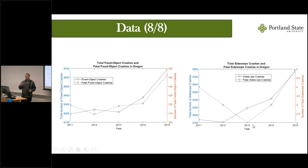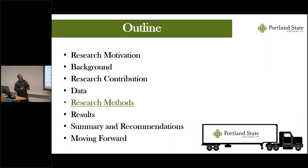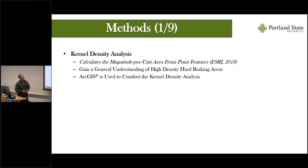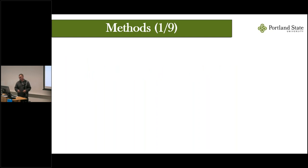Not only are these the most occurring crash types at these locations, they are also crashes that have been increasing in recent years. Understanding the factors that contribute to these crash frequencies can be very beneficial. For the methods, the first step was a kernel density analysis to get a holistic view of high-density hard braking areas within Oregon. ArcGIS was used. As anticipated, the high-density areas are in the densely populated parts of Oregon, though the natural clusterings along US 97, southern US 97, and US 101 are not considered high-density areas.